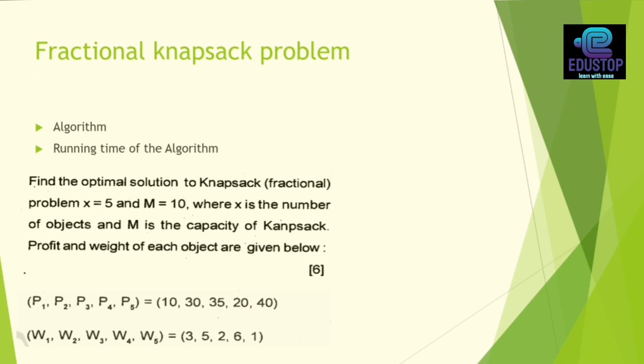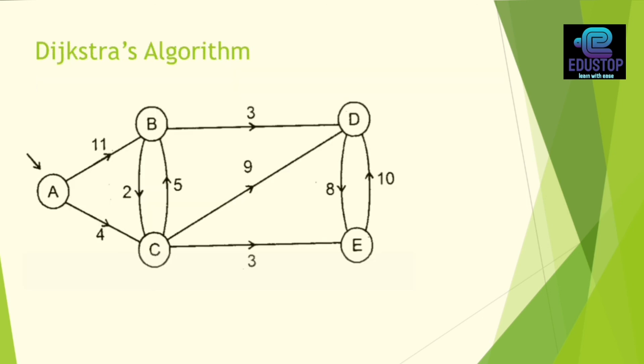Next, your question comes in fractional knapsack problem. You will see the algorithm, what is running time, and you will also see it. This is a very common question. You will give profits and weights. We have to find out the optimal solution from the knapsack problem. Next, this is a very common graph. I have given this graph. You will solve it and see it. Any graph will be given. Here I have plotted a graph.